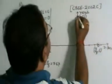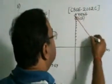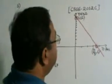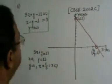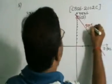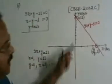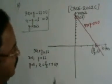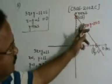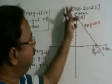So dekhe, in dono points ko hum join kar denge, tumko line ka equation milega. Now, this will be the line. Kya hoga, 3x plus y minus, you write, this is 3x plus y minus 11 is equal to 0. So, this line will represent, this line will be 3x plus y minus 11 will be represented as 0.